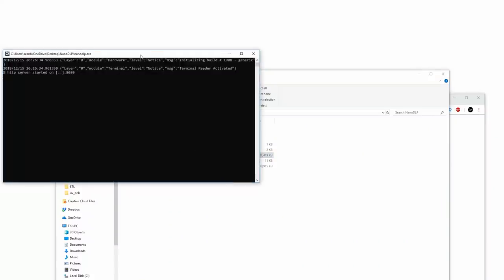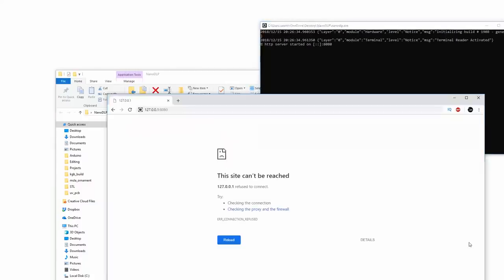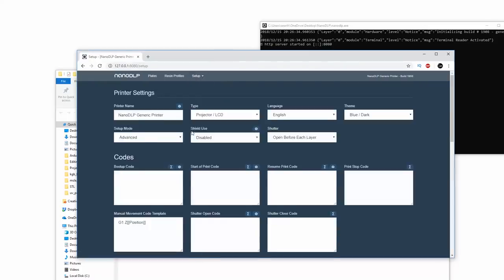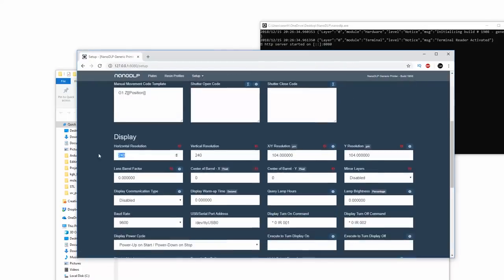So if I run this program it's going to create a server, and then I can go to that server, it's the local host of my computer. And what you need to do is you need to set up the settings so that you have 240 by 240 resolution. The settings are pretty straightforward, and once you get it down then it's really simple.